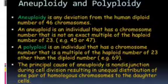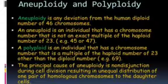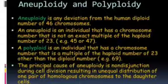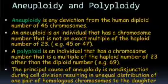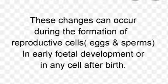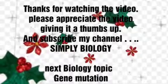Aneuploidy is an individual that has a chromosome number not exactly a multiple of the haploid number. Turner syndrome has 45 chromosomes and Klinefelter syndrome has 47. In polyploidy, chromosome number is a multiple of the haploid number — for example, 23 times 3 is 69. Polyploidy is generally found among plants but rarely in animals; about one-third of grasses are polyploid. These changes can occur during reproductive cell formation, early fetal development, or after birth.